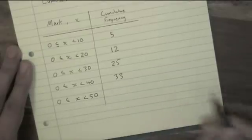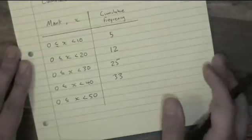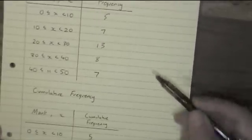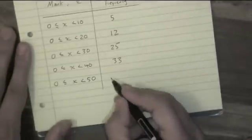Finally, the last row I have to do is the number of people who scored between 0 and 50. Now this is everyone, but I can work it out by adding on the last number, which is seven.